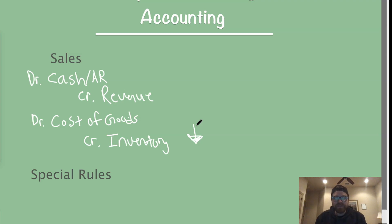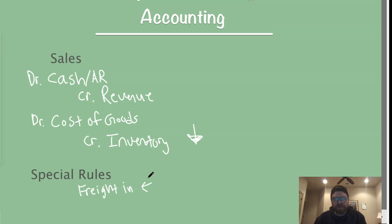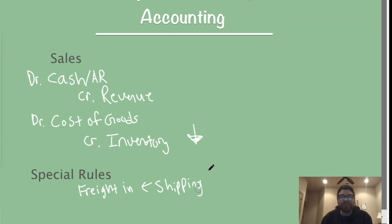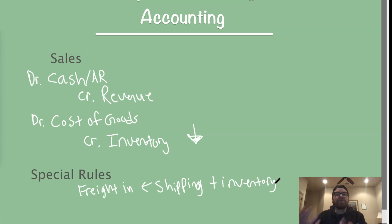Now there are some special rules. The first is what we call freight in. Freight in means you as a company bought some goods and have to pay for shipping to get those goods to your business — like paying for shipping on Amazon. So freight in is basically just shipping costs. When you buy inventory and there's a shipping cost to bring those goods to your business, you have to include that shipping cost into inventory. So you debit inventory for the cost of the shipping — inventory increases by whatever that shipping cost is.